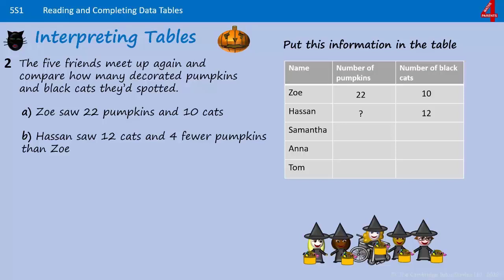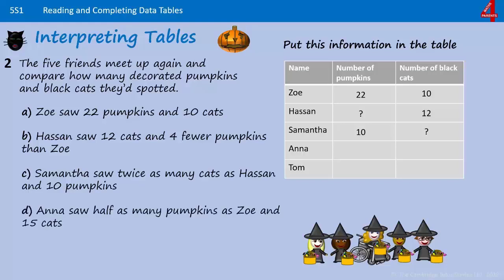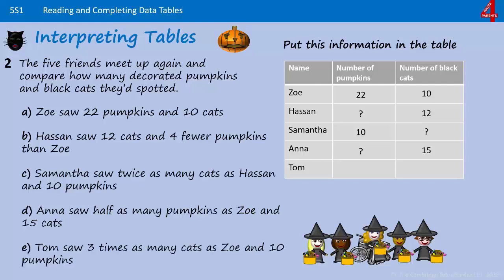Hassan saw 12 cats so we can put 12 there beside Hassan for the cats, and four fewer pumpkins than Zoe, so I'm going to put a question mark in there for now. Samantha saw twice as many cats as Hassan so I'll put a question mark under cats beside Samantha's name, and she saw 10 pumpkins so we can put that in. Anna saw half as many pumpkins as Zoe so I'm going to put a question mark there, and 10 pumpkins beside Tom.